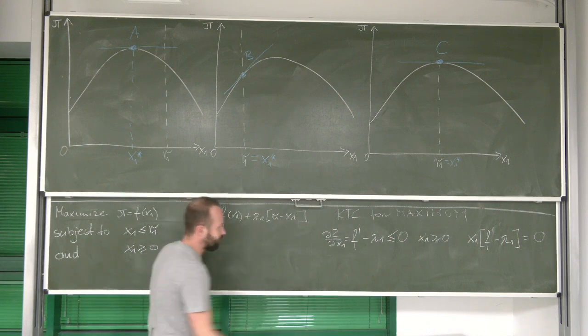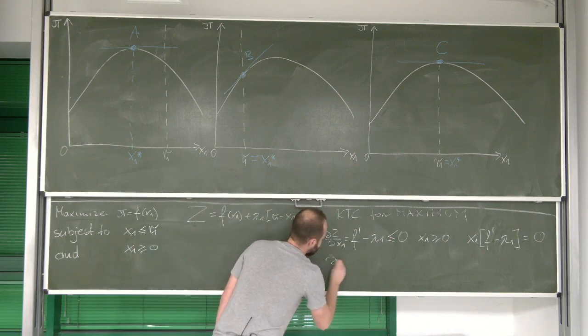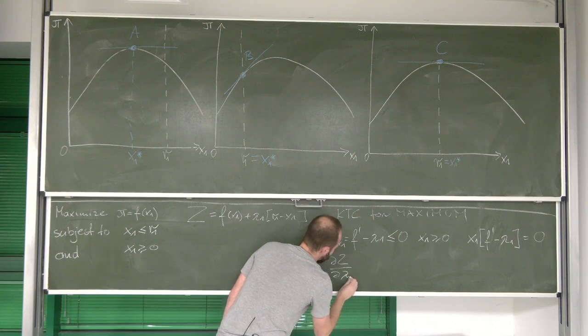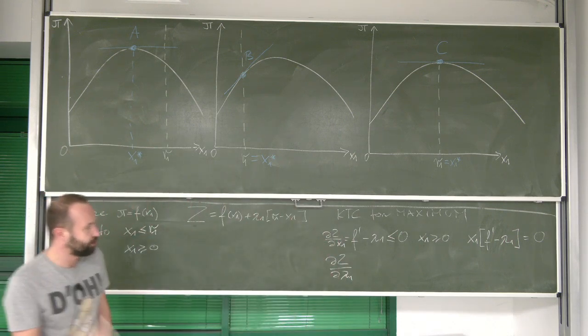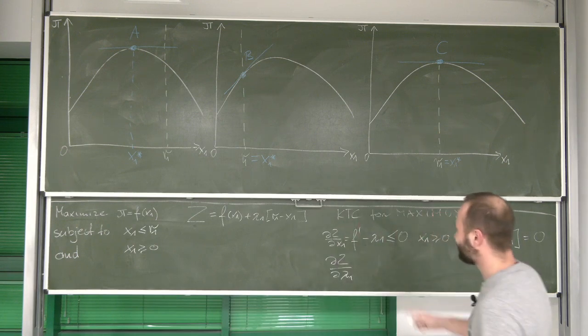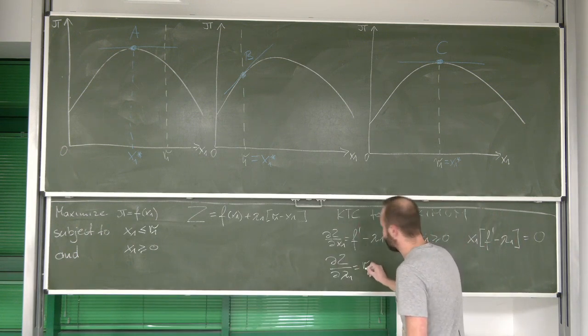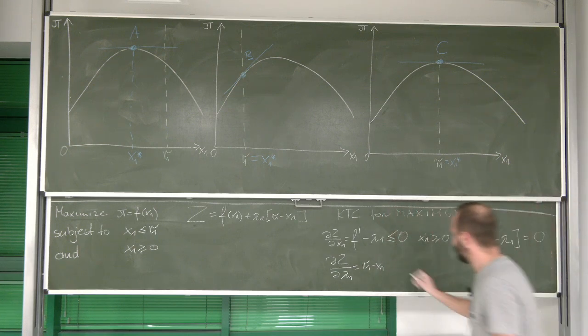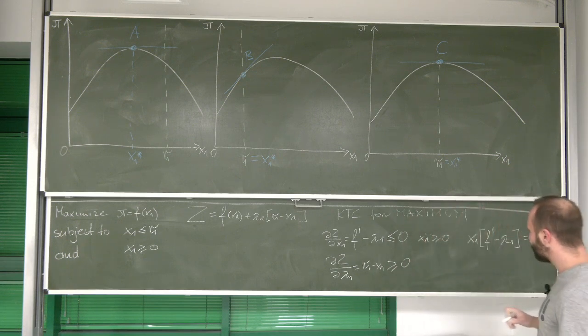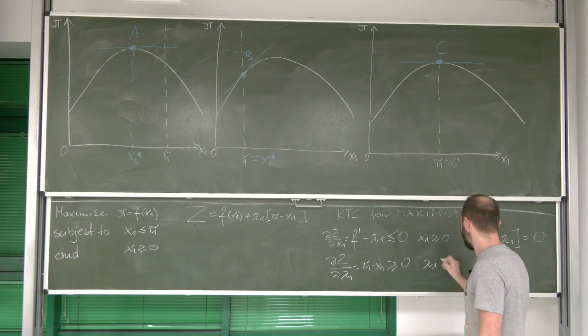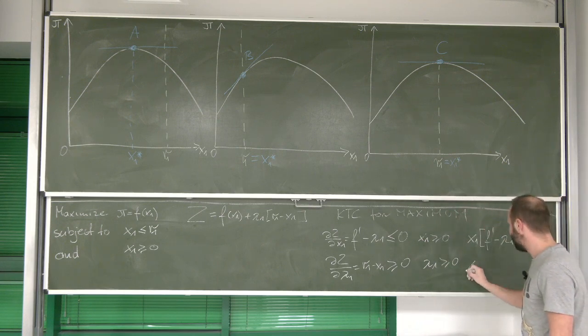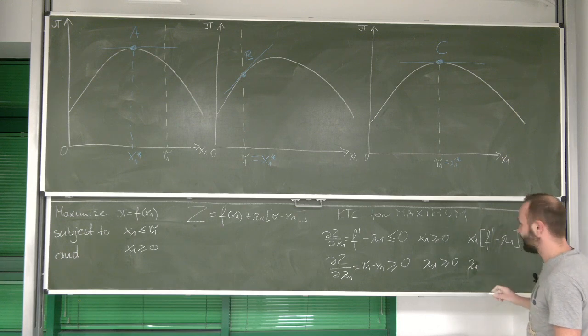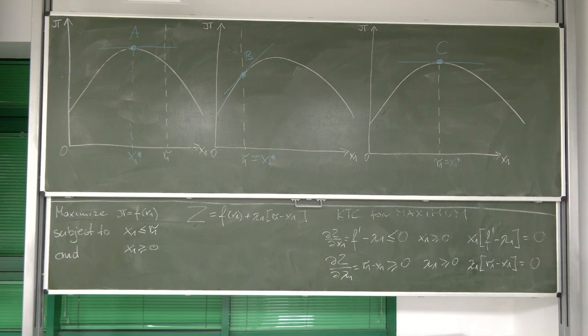Then, the second set of conditions, we get by differentiating z with respect to lambda, and of course, then we get restatement of the restriction. We now require this to be higher or equal to zero with lambda 1 being higher or equal to zero, and one of them, so lambda or r1 minus x1 need to be equal to zero.